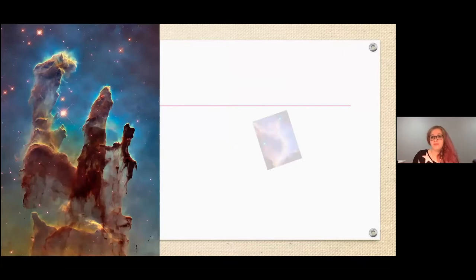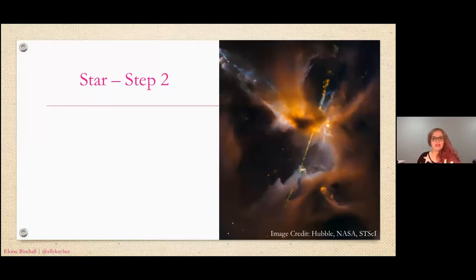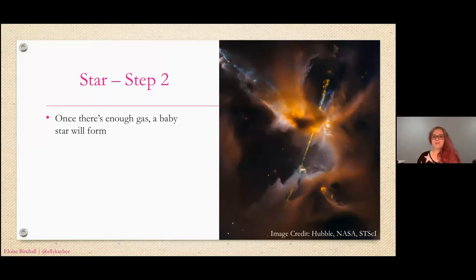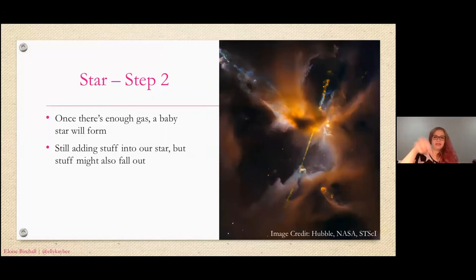Looking a bit closer, you can see these little points — I've pointed to one with a big arrow. That little point is actually where we might have one star forming; they form at the edges of these big clouds. Once there's enough gas in that small area, a star will start to form — the mix has just come together, we're starting to get a dough. We're still adding stuff into the star, and stuff might fall out, as often happens when you pour flour into a bowl.